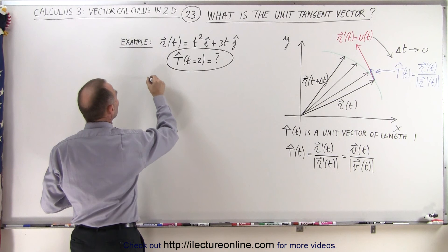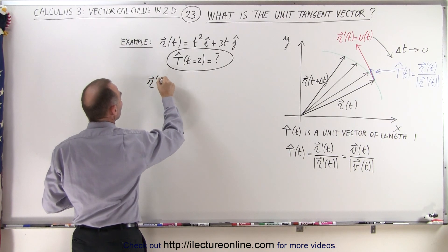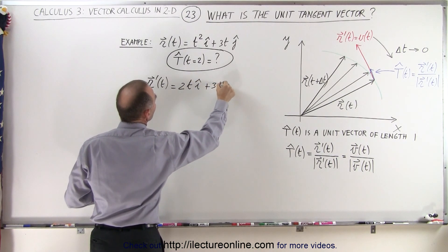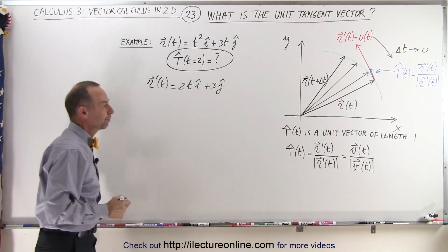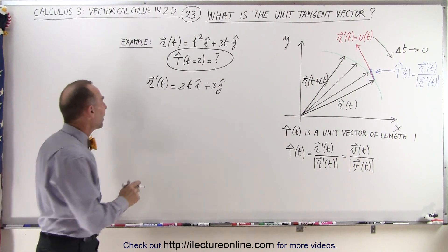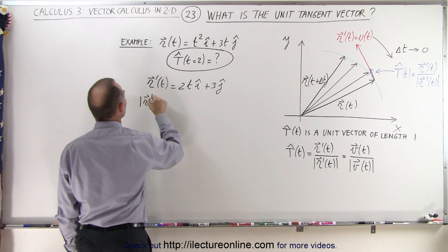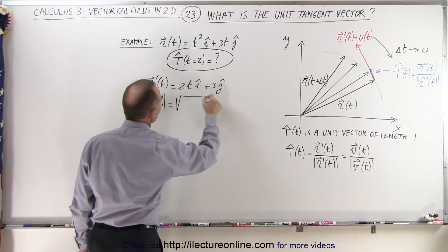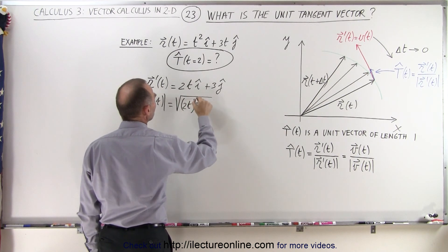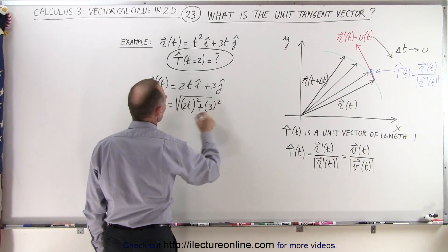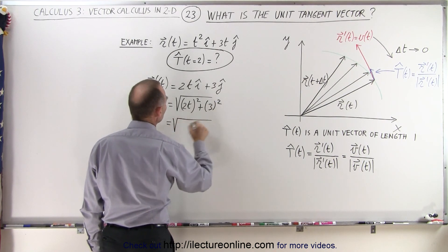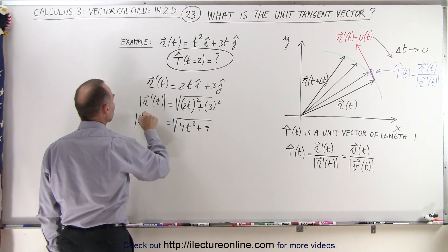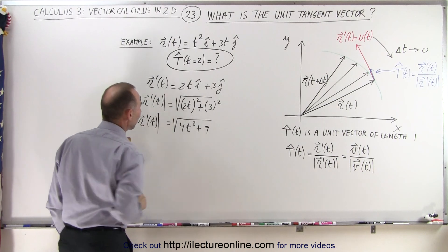The derivative r' as a function of time is equal to 2t in the i direction plus 3 in the j direction. Now we want to find the magnitude of that derivative. The magnitude of the derivative of the position vector is equal to the square root of the x-component squared, which is (2t)², plus the y-component squared, 3². That gives us the square root of 4t² + 9.